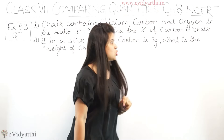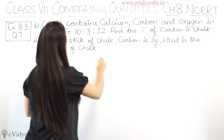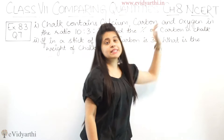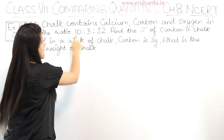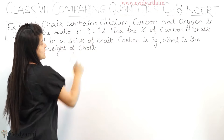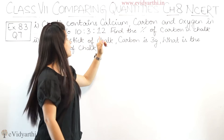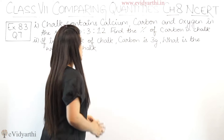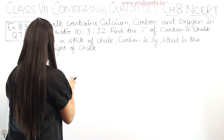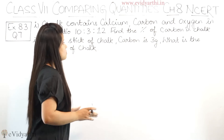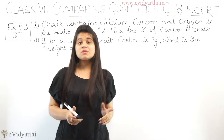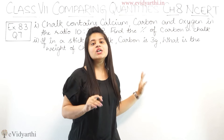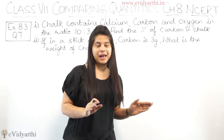We need to find the carbon percentage. As you can see, this ratio has 3 parts and here are the names. So this means 10 is calcium, 3 is carbon, and 12 is oxygen. We have chosen this exercise in which we change the ratio into percentage, and we apply the same method here.